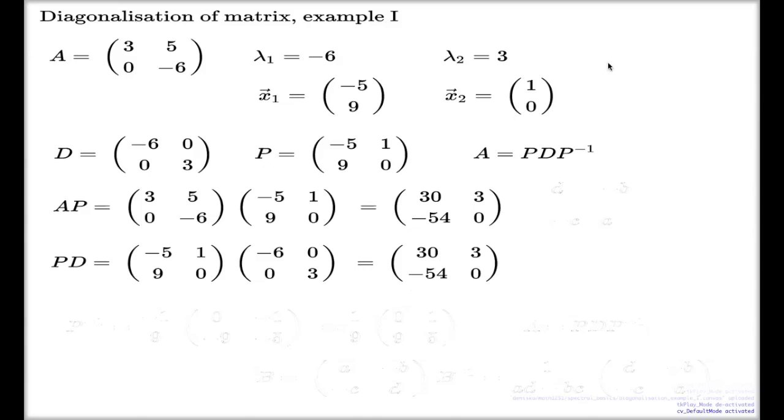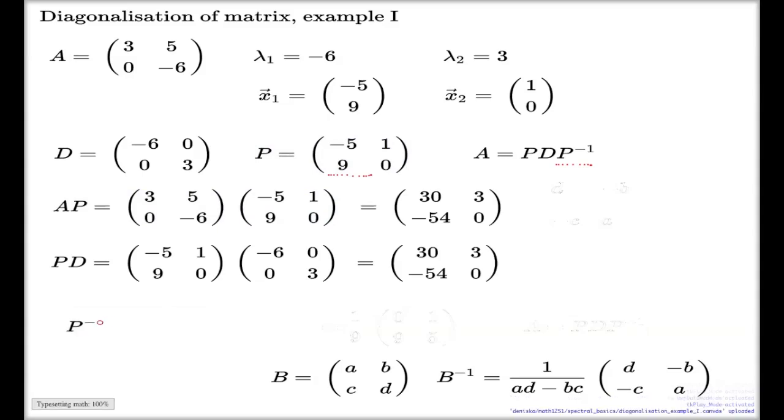If you want to know what's the inverse of P for 2 times 2 matrix, if you have any matrix of size 2 times 2 with entries a, b, c, and d, the inverse of such matrix is computed like this. You're supposed to remember this formula from the first semester. So for this matrix P, if you want to see the inverse, here it is.